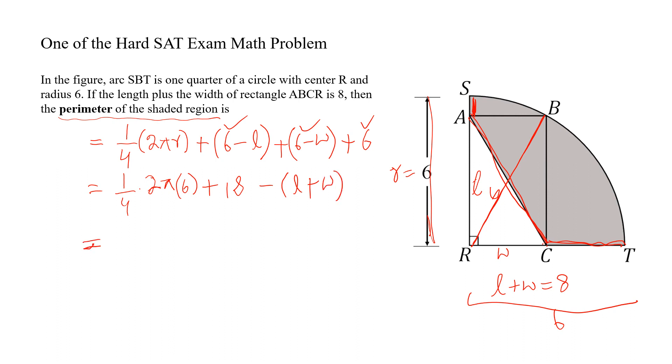Simplify this and we get 3π plus 18 minus, this is equal to 8, and we get 3π plus 10. This is the required perimeter of the shaded region. Like the video, share with your friends, and don't forget to subscribe to my YouTube channel.